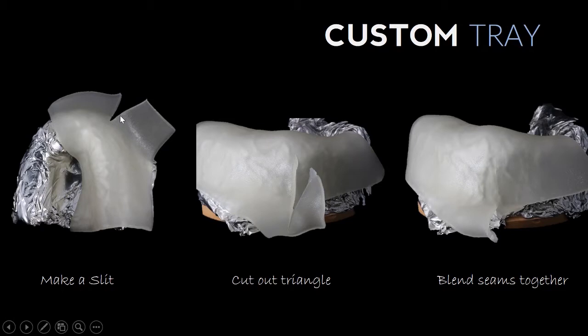So in doing so, when you're making this adaptation, once you get to this curved area where the arch starts to curve, you're going to want to make a slit in there and then overlap the material.